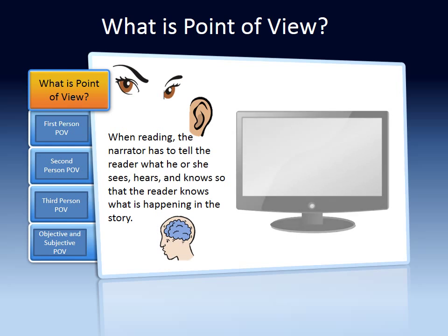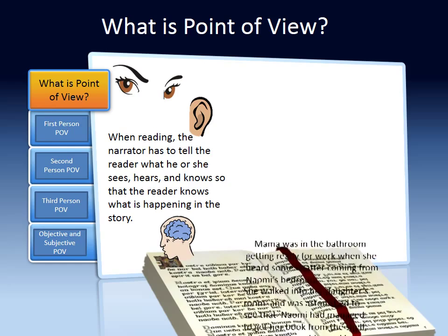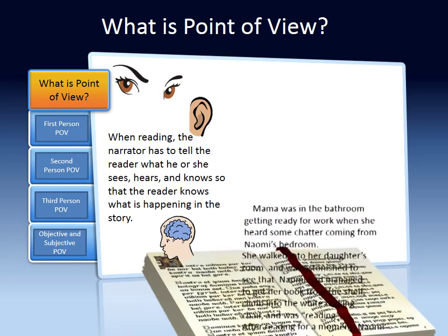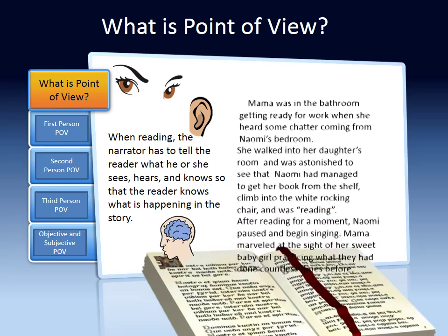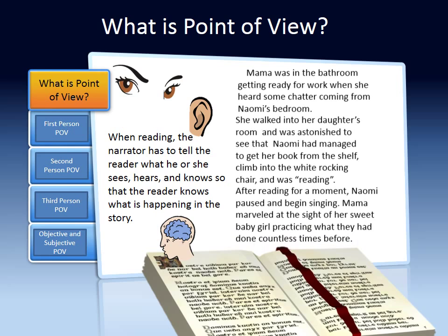When reading, the narrator has to tell the reader what he or she sees, hears, and knows so that the reader knows what is happening in the story. Let's read this scenario. Mama was in the bathroom getting ready for work when she heard some chatter coming from Naomi's bedroom. She walked into her daughter's room and was astonished to see that Naomi had managed to get her book from the shelf, climb into the white rocking chair, and was reading. After reading for a moment, Naomi paused and began singing. Mama marveled at the sight of her sweet baby girl practicing what they had done countless times before.